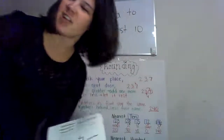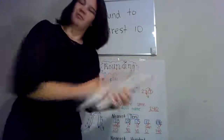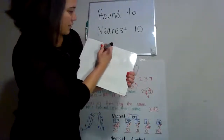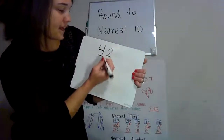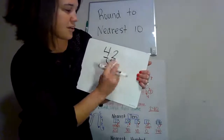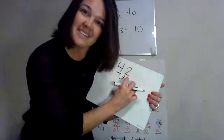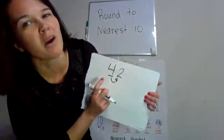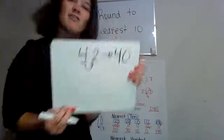Are you all ready to try some on your own? If I have the number 42, we're going to round to the nearest tens place. We're going to mark our place, look next door. Five or greater? Four or less? Yes. So we're going to let the four rest. So 42 rounds down to 40.